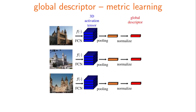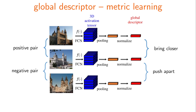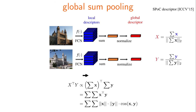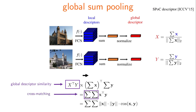Our starting point is metric learning of global image descriptors. Descriptors of matching images are pushed closer, while descriptors of non-matching images are pushed apart. In the case of global sampling, global descriptor similarity is decomposed into aggregation of local descriptor similarities.